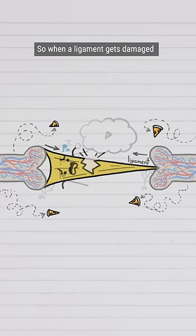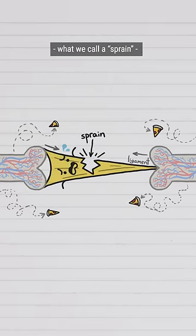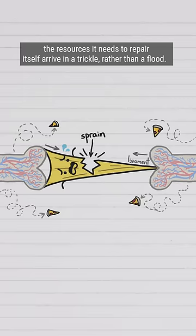So when a ligament gets damaged, what we call a sprain, the resources it needs to repair itself arrive in a trickle rather than a flood.